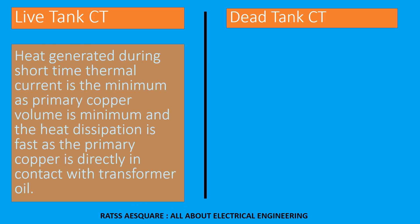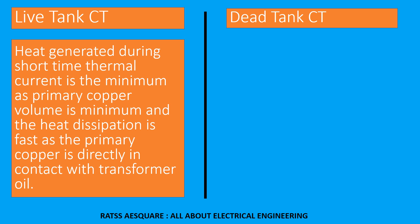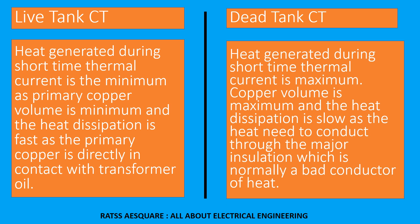In live tank CT, heat generated during short-time thermal current is minimal, as primary copper volume is minimum and heat dissipation is fast since the primary copper is directly in contact with transformer oil. In dead tank CT, heat generated during short-time thermal current is maximum — copper volume is maximum and heat dissipation is slow, as the heat needs to conduct through the major insulation, which is normally a bad conductor of heat.